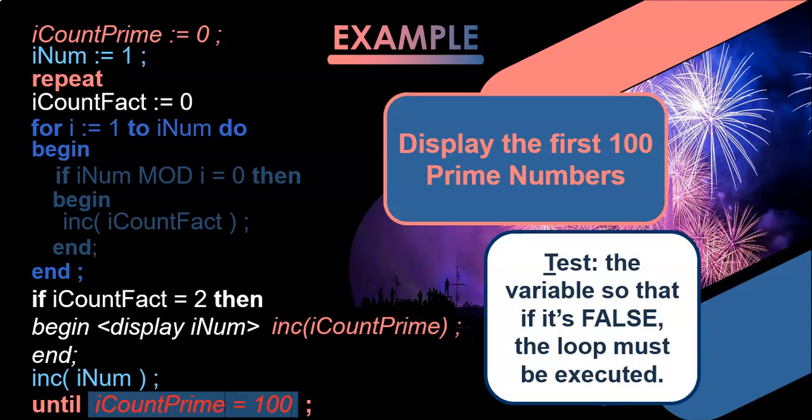So: we set rCountPrime to zero — that's our initialize. Every time we find a prime number, we increase rCountPrime — that's our change. And at the end, we test to see if rCountPrime is 100, because if it's 100 then we can stop looking. Let's see if we can do this in Delphi.